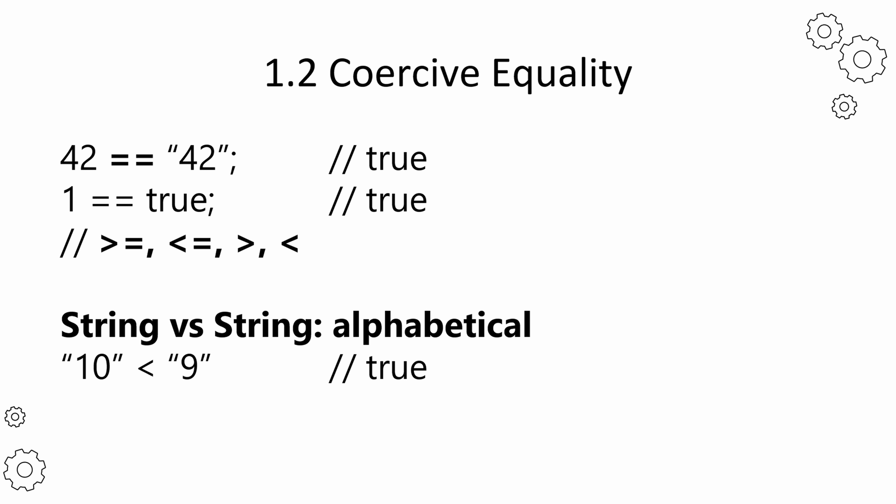When comparing two strings, you are checking their alphabetical order, one character at a time. So actually, we don't have a number 10 on the left hand side, but two characters, one and zero.